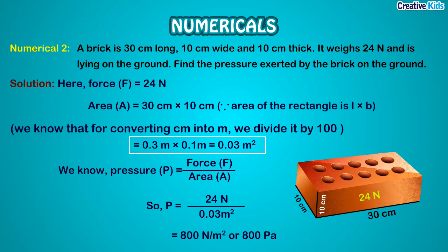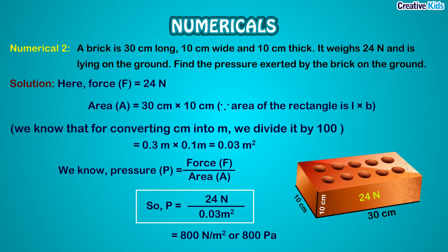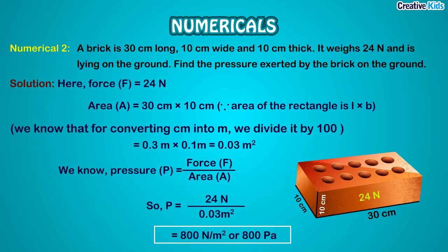We have to calculate the pressure exerted by the brick on the ground. Formula: P = F/A. Force = 24 N, Area = 0.03 m². So P = 24 N ÷ 0.03 m² = 800 N per meter square, or 800 Pascals.